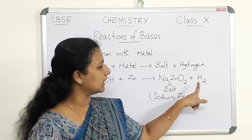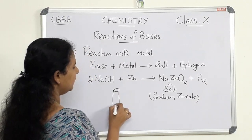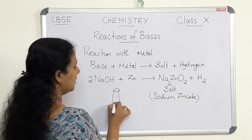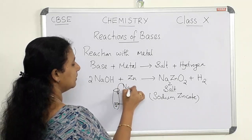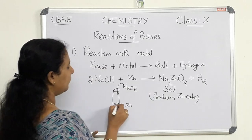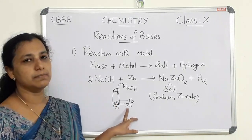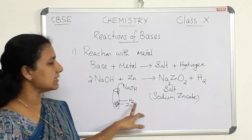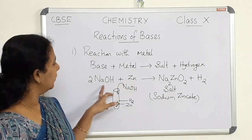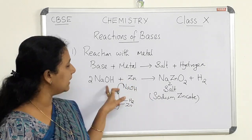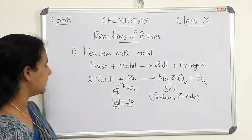The salt formed is sodium zincate and the gas produced is hydrogen. If we are doing this experiment in the laboratory, we put zinc pieces or zinc granules in a test tube and add sodium hydroxide solution. We can see bubbles forming on the surface of the zinc metal — hydrogen gas is evolved on the surface of zinc metal. This is similar to the reaction between acid and metal: base reacts with metal produces salt and hydrogen gas.